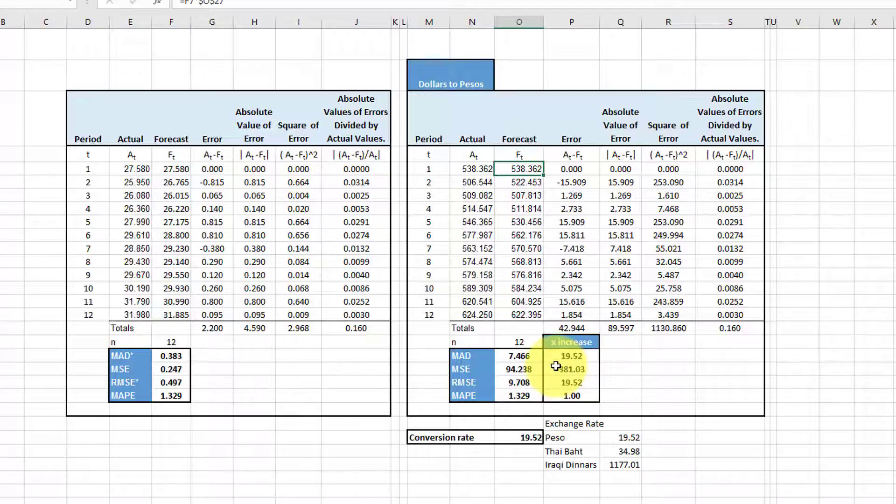And you would look at these error metrics and you would say, wow, this second forecast has much larger errors than the first forecast. Therefore, the second forecast is not as good. But you would be wrong because again, those metrics are based on scale, the units.